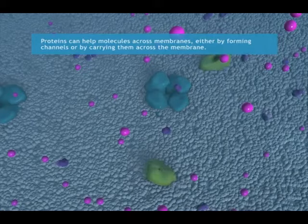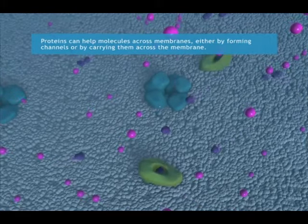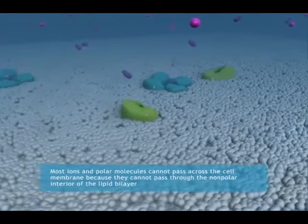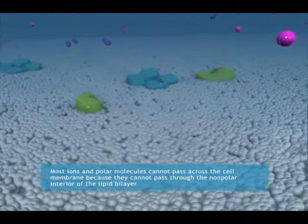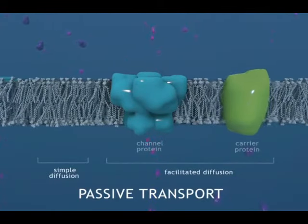Proteins can help molecules across membranes, either by forming channels or by carrying them across the membrane. Most ions and polar molecules cannot pass across the cell membrane because they cannot pass through the non-polar interior of the lipid bilayer. However, such molecules can cross the cell membrane when they are aided by transport proteins.